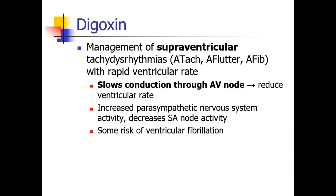Digoxin works by slowing conduction through the AV node, which reduces the ventricular rate. So even though the atria may be fibrillating at several hundred beats per minute, we see a very small number of those beats allowed to pass through the AV node and stimulate the ventricle. Digoxin also causes increased parasympathetic nervous system activity and may decrease SA node activity.